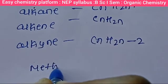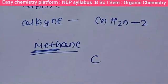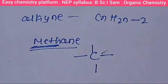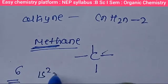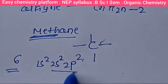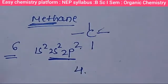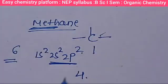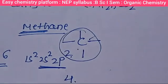Let's take the first example — methane. Meth means one carbon atom, and it has single bonds. Carbon has atomic number 6, with electronic configuration 1s², 2s², 2p². The valence number of electrons is four. So carbon has four valencies, meaning methane has four hydrogen atoms bonded to one carbon atom.